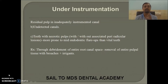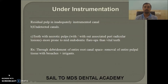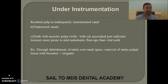Under-instrumentation causes pulpal remnants to be left in the canal. These remnants act as a nidus for infection, producing virulence factors that convert an asymptomatic pulp into a symptomatic pulp, resulting in endodontic flare-ups. To manage this, go for proper debridement of the root canal space — remove the entire pulp with broaches and H-files and use proper irrigants.